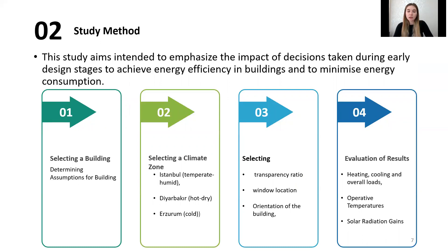This study intended to emphasize the impact of decisions taken during the early design stage to achieve energy efficiency in buildings and minimize energy consumption. The study consists of four parts. The building was selected first, and then the climate zone was selected: Istanbul (temperate humid), Diyarbakır (hot dry), and Erzurum (cold climate). Three cities were selected representing different climatic regions of Turkey. Then decisions about passive climatization parameters — transparency ratio, window location, and building orientation — were analyzed, and the effects of these design parameters on energy consumption, operative temperature, and solar gains were compared.